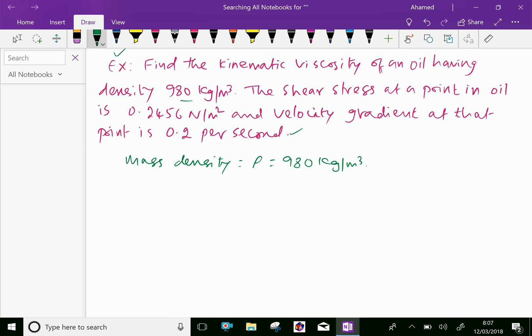The shear stress at a point in oil, that is shear stress τ, equals 0.2456 Newton per meter square.